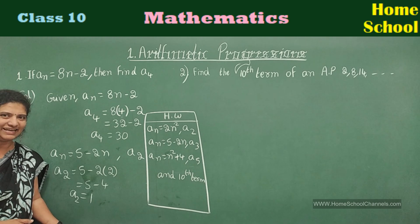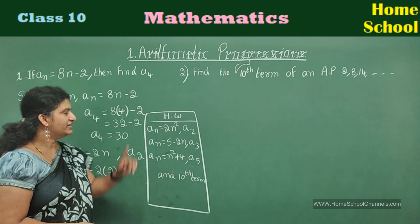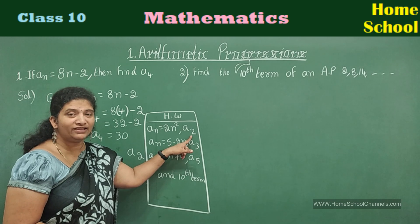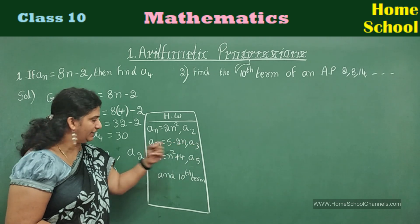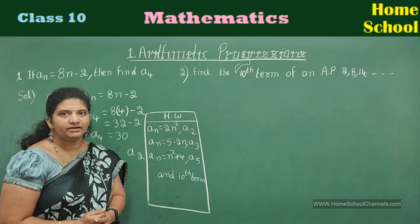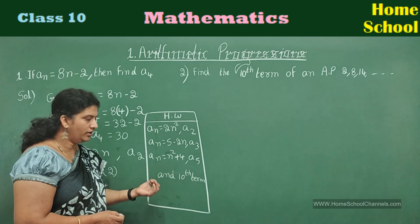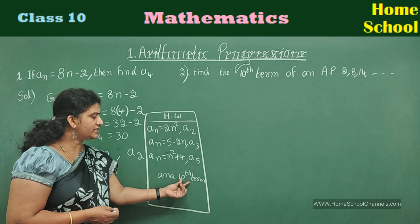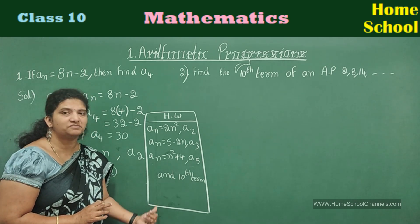If you understand this, try these three problems and send the answers. The three problems are: aₙ = 5a₅ − 2n, find the value of a₃; aₙ = n² + 4, find the value of a₅; and find the 10th term. In your question paper they may ask for a₅, a₃, a₆, a₁₀, or they may ask for the 5th term, 20th term, or 7th term. The 10th term is nothing but a₁₀ — just substitute n = 10 and get the answer.